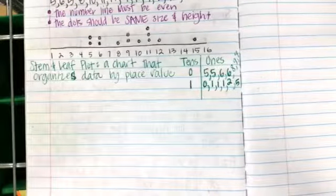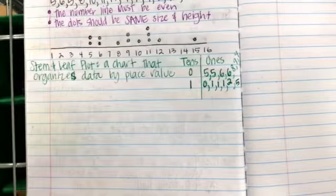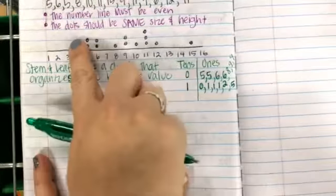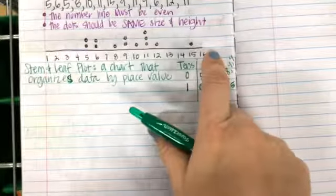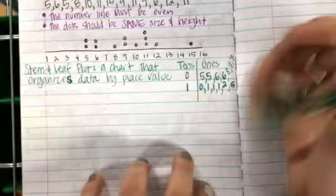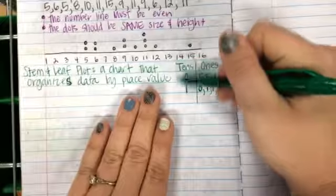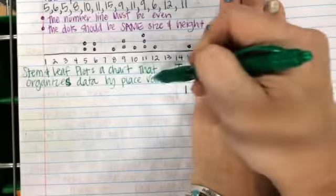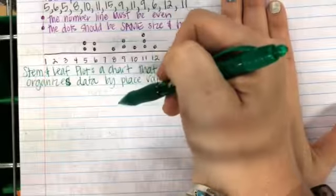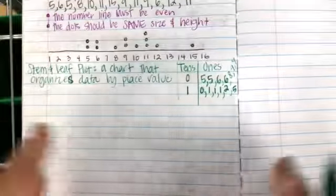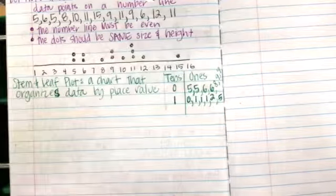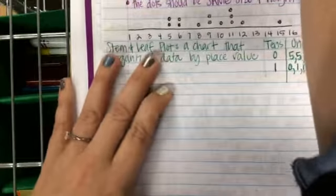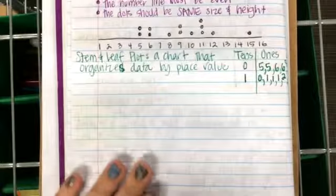Hint — hint on your homework — if I wanted to ask you to make a back-to-back stem and leaf: let's pretend this data is about dollars students have in their wallet, and I collected another set about dollars teachers have. You'd make one going the other way for teachers, so you can compare them side by side. If you can't remember what a back-to-back stem and leaf plot is, you could always Google it.